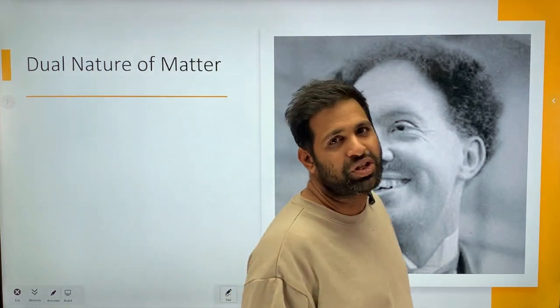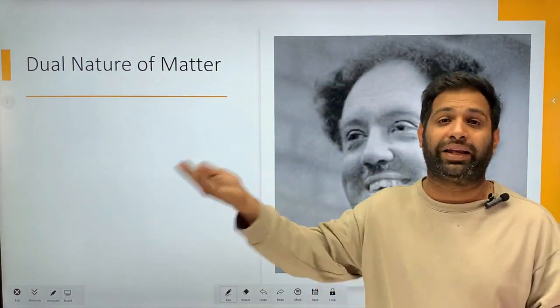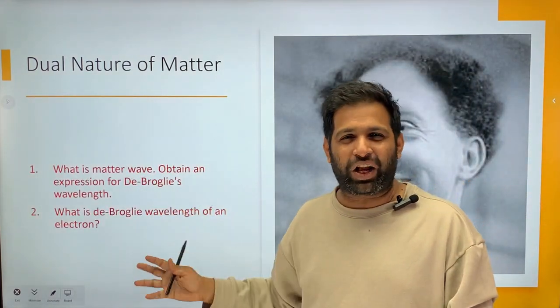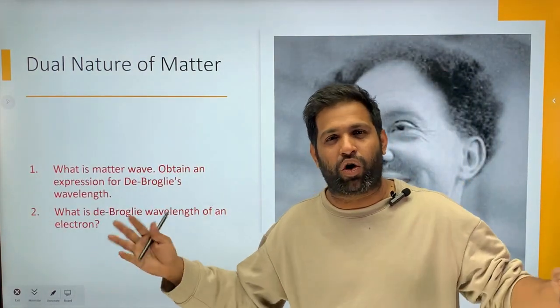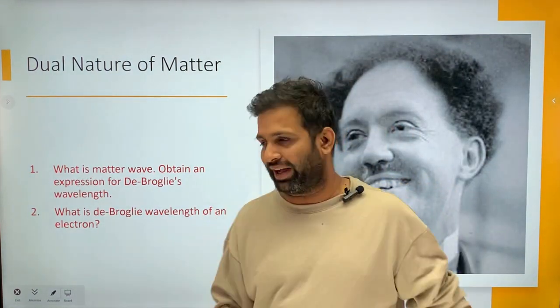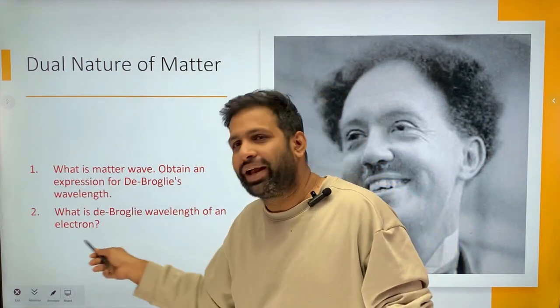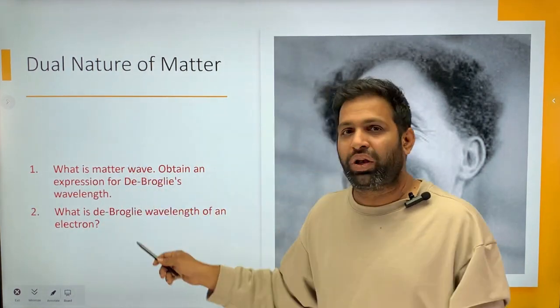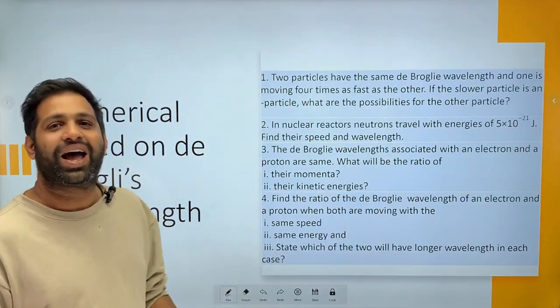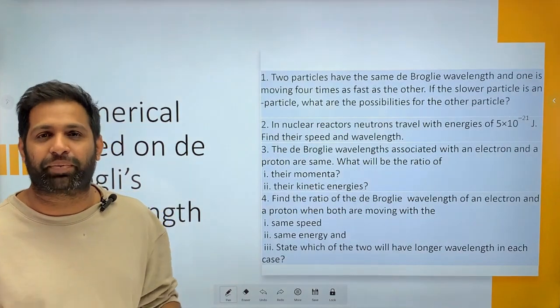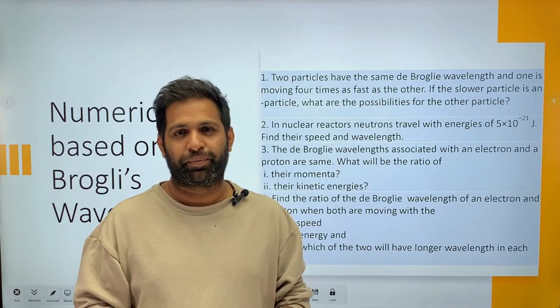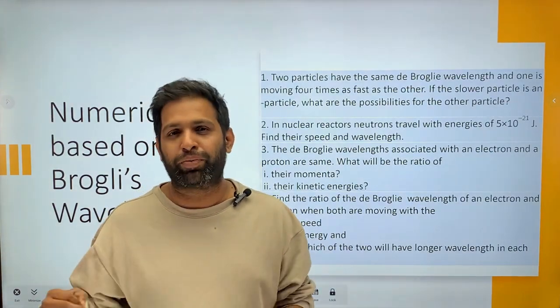Chapter numerical point of bahut zyada important hai toh numerical karke hi jana iske bilkul option me nahi chodna hai aur mere taraf se stopping potential wale numerical sabse zyada important hai aayenge karne ka aapko to link dekh sakte ho you are getting continuously some links us kipur click karo aapko aaj aaj aaj question phir dual nature of matter de Broglie's hypothesis do answer is chapter phe ek answer aagli chapter that is atom molecular nuclei.